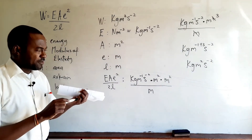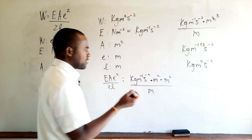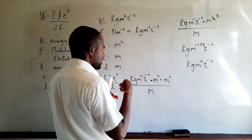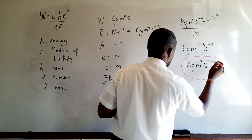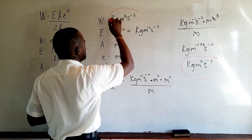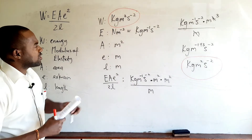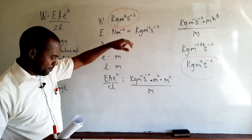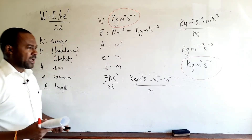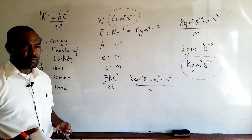Because we are multiplying meters with indices of the same base, we add the powers: m to the minus one plus three gives m squared. So the right-hand side simplifies to kilogram meter squared per second squared. Comparing this to the base units of W — kilogram meter squared per second squared — the base units are identical, and therefore the equation is indeed homogeneous.